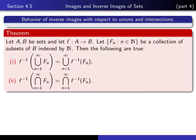The second part of the theorem says exactly the same thing about intersections. If you first intersect all of the sets and then take the inverse image, that's the same as first taking the inverse image of each of the sets and taking the intersection of what you get. This is a nice result that you should always remember because you're going to use it in more advanced classes. The basic point is that inverse images behave very well under set operations.